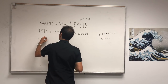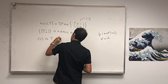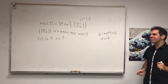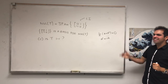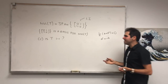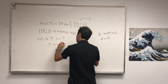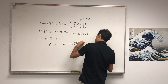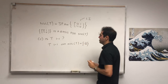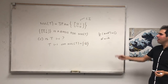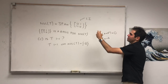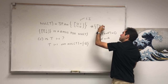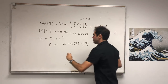The next question is: is T one-to-one? Here's a nice thing — for linear algebra, one-to-one is very easy: T is one-to-one if and only if the null space is trivial, meaning just the zero vector. We just found that the null space is non-trivial because it's the span of a non-zero vector. So the answer is no, T is not one-to-one.